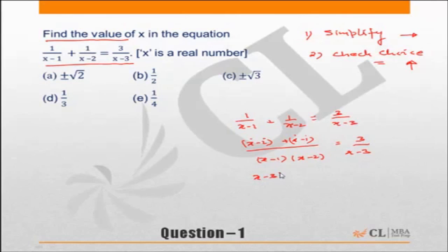So it is x minus 3 into 2x minus 3. The 2x minus 3 from here has been taken on the opposite side. On the right hand side, we will get 3 into x minus 1 into x minus 2.